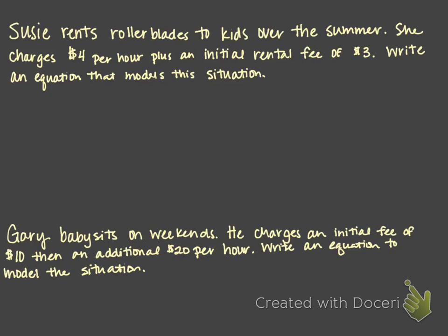Alright, now we're going to look at some word problems. How can we write an equation given a word problem? The first thing we want to do is find our slope, or our growth — what is going to be consistently growing? And then find our starting value. For our first problem: Susie rents rollerblades to kids over the summer. She charges $4 per hour plus an initial rental fee of $3. Write an equation that models this situation.